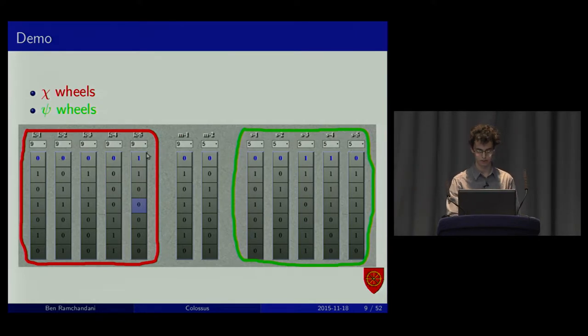You XOR the top five of those, the top five of those. That produces a key, which is then XORed with the character. The chi wheels, the ones in red, turned with every character. The psi wheels, about half the time when they turned exactly, was determined by these two middle motor wheels.